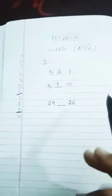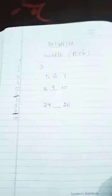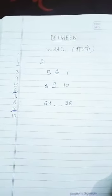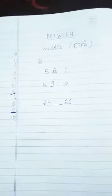So let's count. After twenty, it is twenty-one, then twenty-two, then twenty-three, then twenty-four, then twenty-five and twenty-six. So we got to know that in between twenty-four and twenty-six, the number is twenty-five.